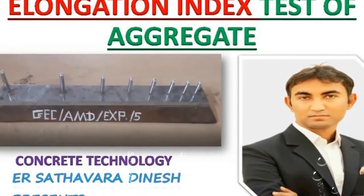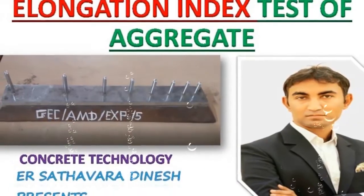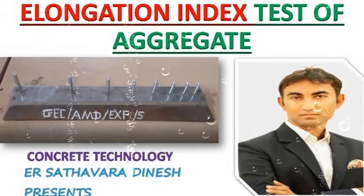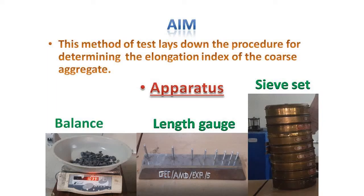Today we check the elongation index of aggregate with the use of a length gauge. The aim of this method of test is to lay down the procedure for determining the elongation index of coarse aggregate. The apparatus required is a balance, length gauge, and sieve set.